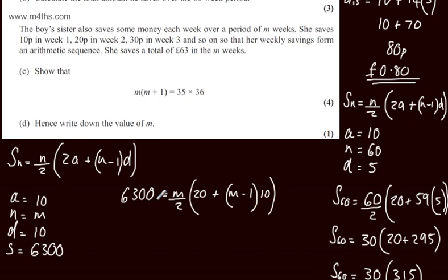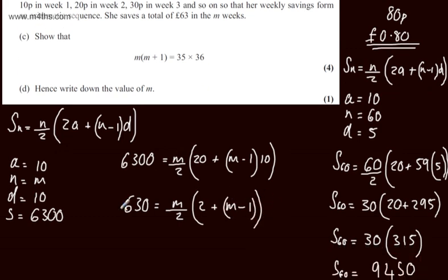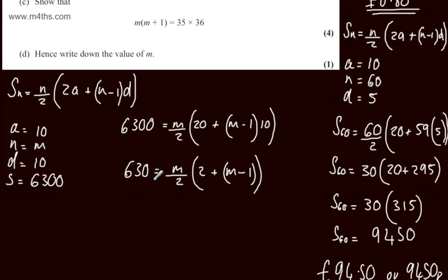Lots of different ways we can take it from here. I'm going to first divide both sides of the equation by 10. If I do that I'll have on the left hand side 630. I will have m over 2. I will have 2 plus m minus 1. So all I've done here is simply divided both sides of the equation by 10.